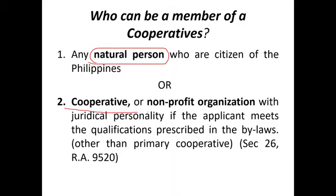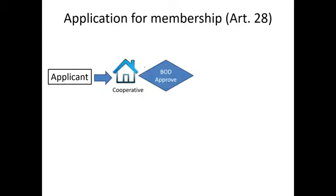In secondary and tertiary cooperatives, the members may include juridical persons such as cooperatives, or non-profit organizations. So those rules apply to secondary and tertiary cooperatives, while natural persons apply to primary cooperatives. For example, if I want to become a member of a cooperative, I fill up an application form and submit it to the cooperative. The board of directors then has two options: deny or approve the application.